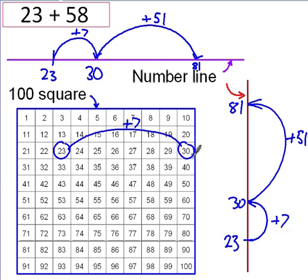Okay, I'm going to add 1, first of all, and then 50. There's 1. Now, 10, 20, 30, 40, 50, 81 is my final answer.